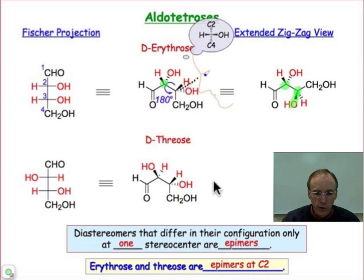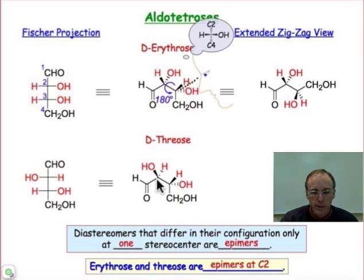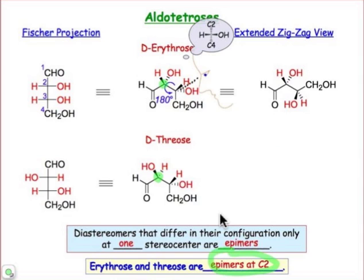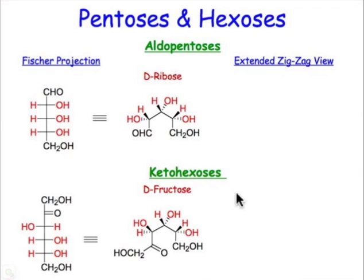The planar zigzag form reorients that last group — now notice the hydroxyl group is coming out towards us rather than going back. That's where a model will make the most sense. D-threose is an epimer at one position. An epimer has a diastereomeric relationship with one configuration changed. The epimer of erythrose is threose — also D-threose — so we don't change that bottom-most position; we change the configuration at C2. Erythrose and threose are known as C2 epimers. Those are the two forms of the C4 monosaccharides.